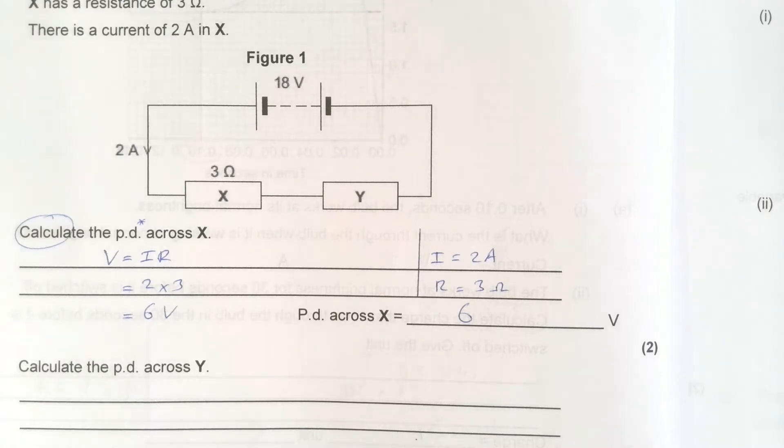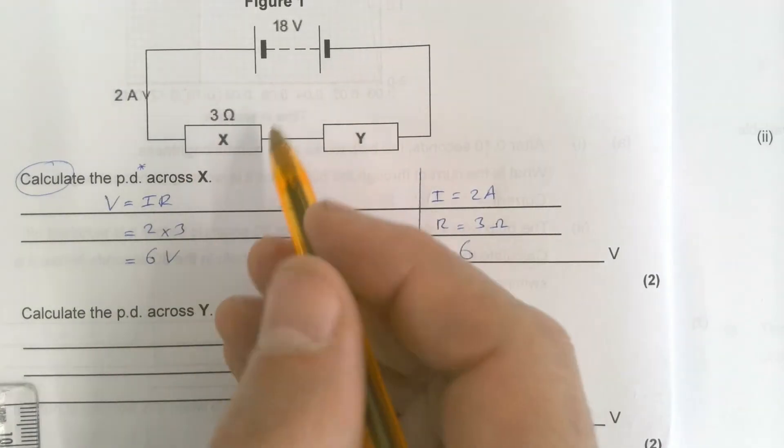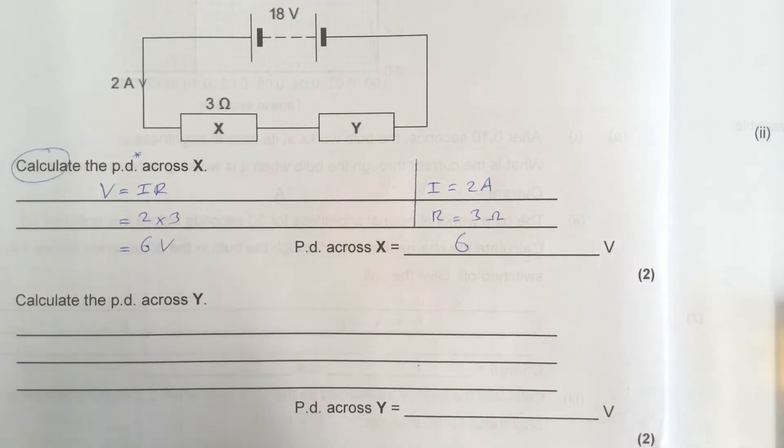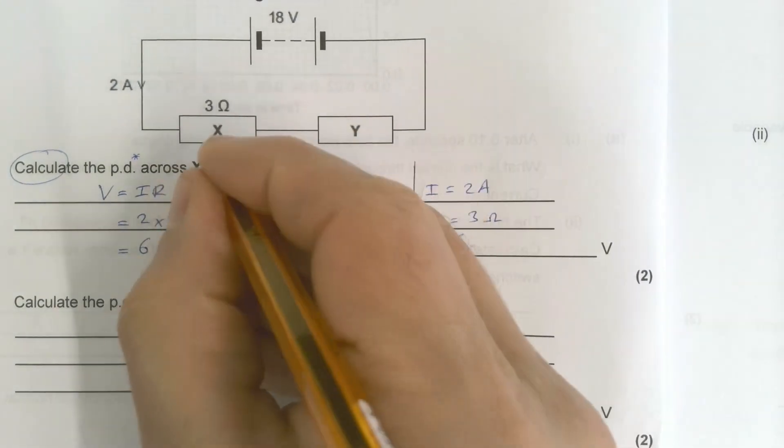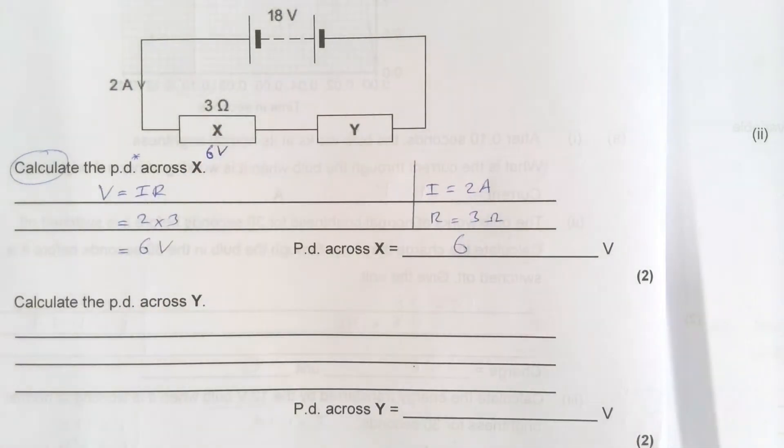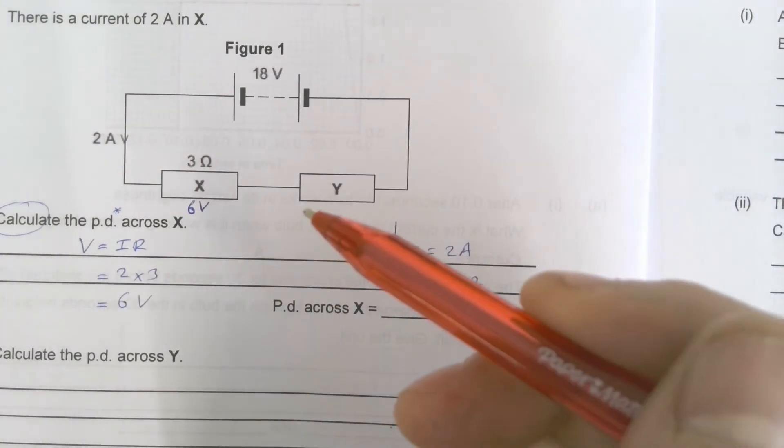Calculate the potential difference across Y. Okay, so this one's a little trickier. Although, hopefully not. So what we know... I'm going to write that in. I know this is now 6 volts. 6 volts here.